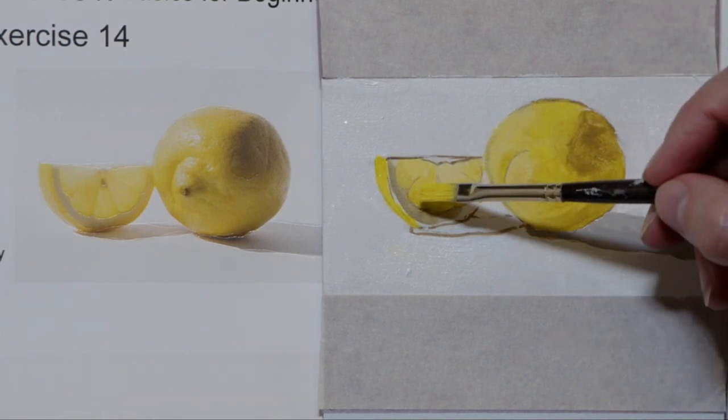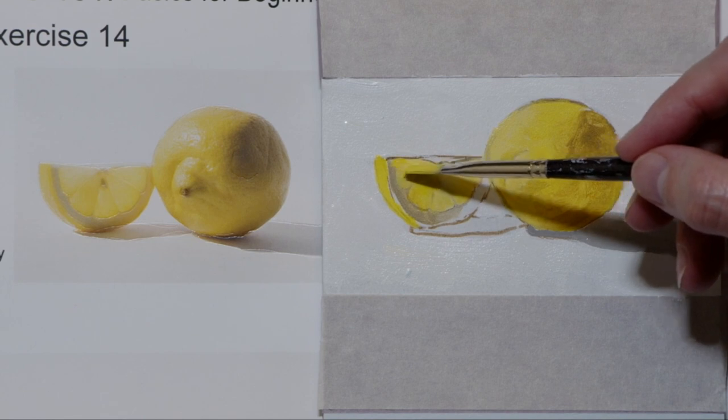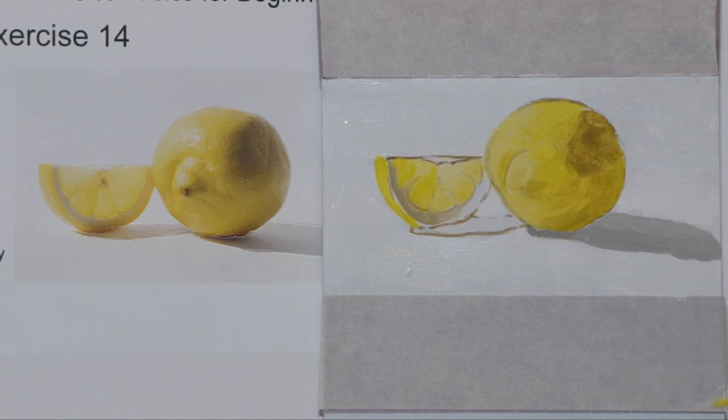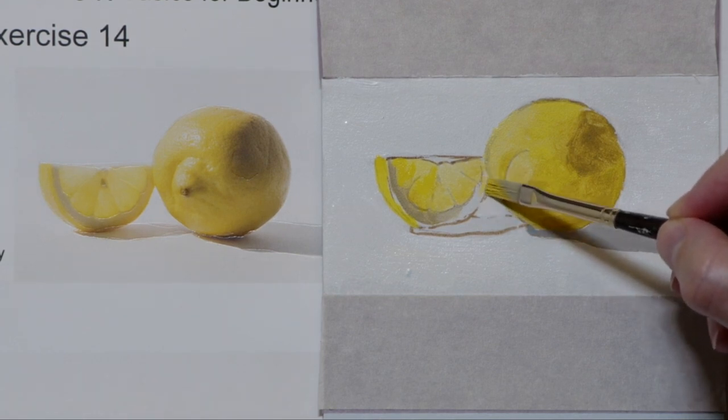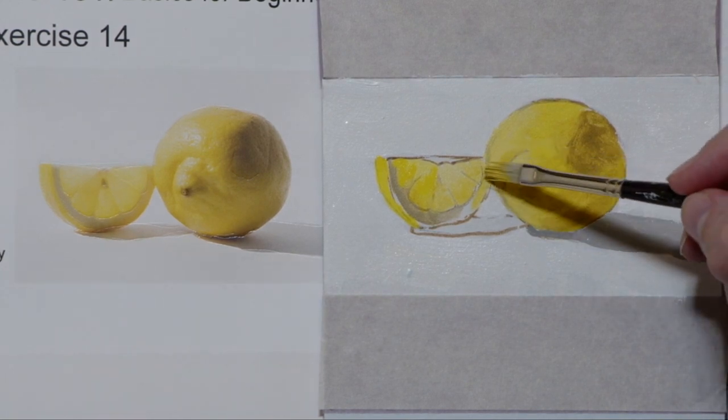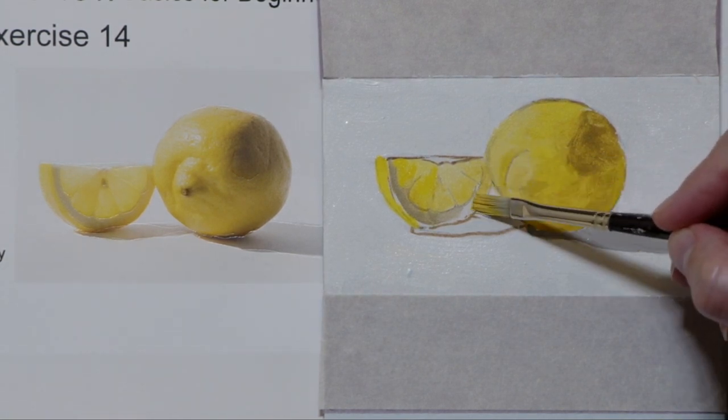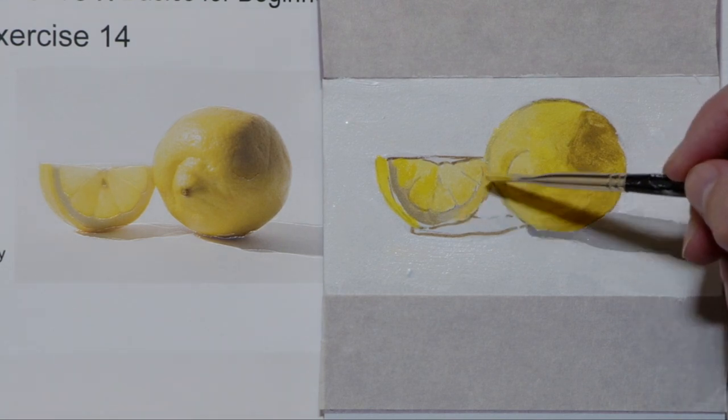Trying to create the shape. Then I'm going to come in here. We have some reflected light coming off of the round lemon onto the slice and you can really see it in that small area of the rind where it's not as dark.